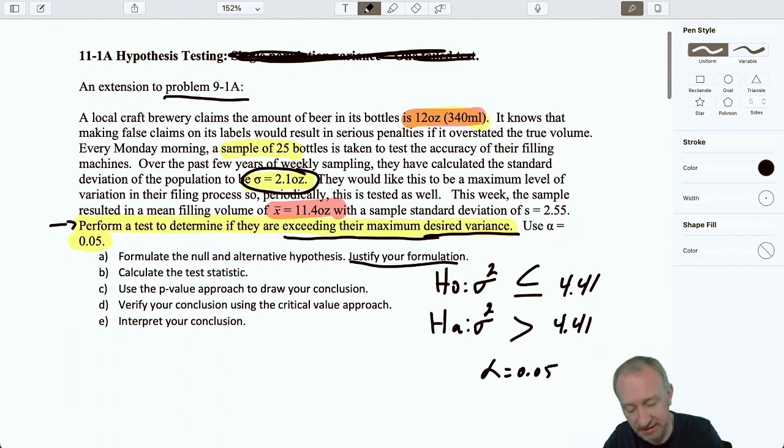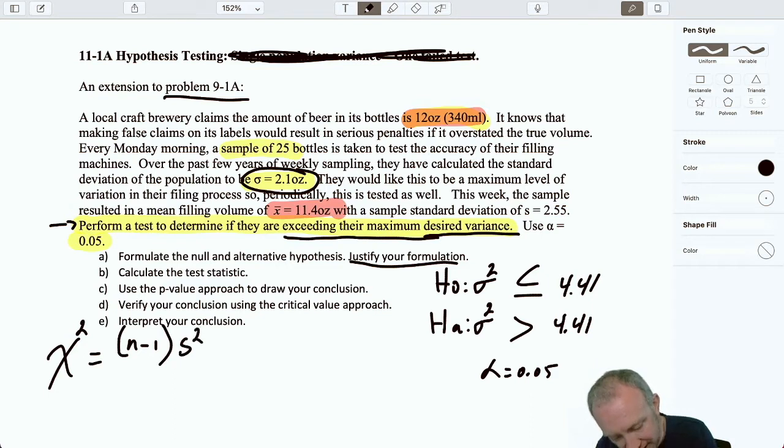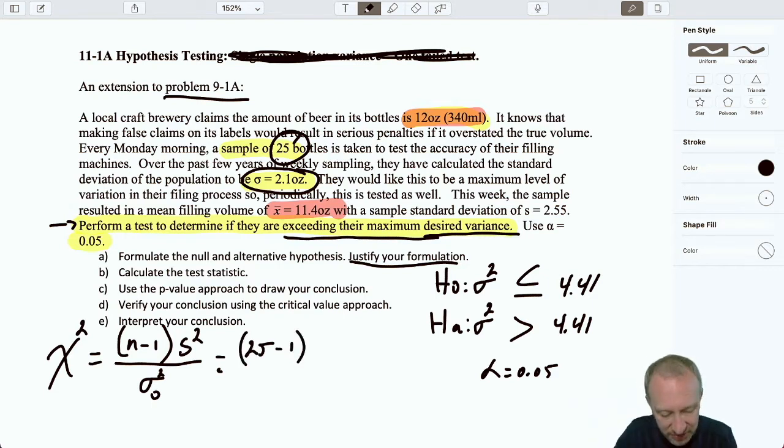If the evidence supports the null hypothesis, then everything's fine. We're within our tolerable amount of variation. If the evidence supports the alternative hypothesis, now we have evidence to show that we are exceeding our maximum desired variance. Calculate our test statistic. Well, we're doing a test on variance. So our test statistic is a chi-squared variable, which is going to be n minus 1 times that sample variance, divided by our hypothesized variance.